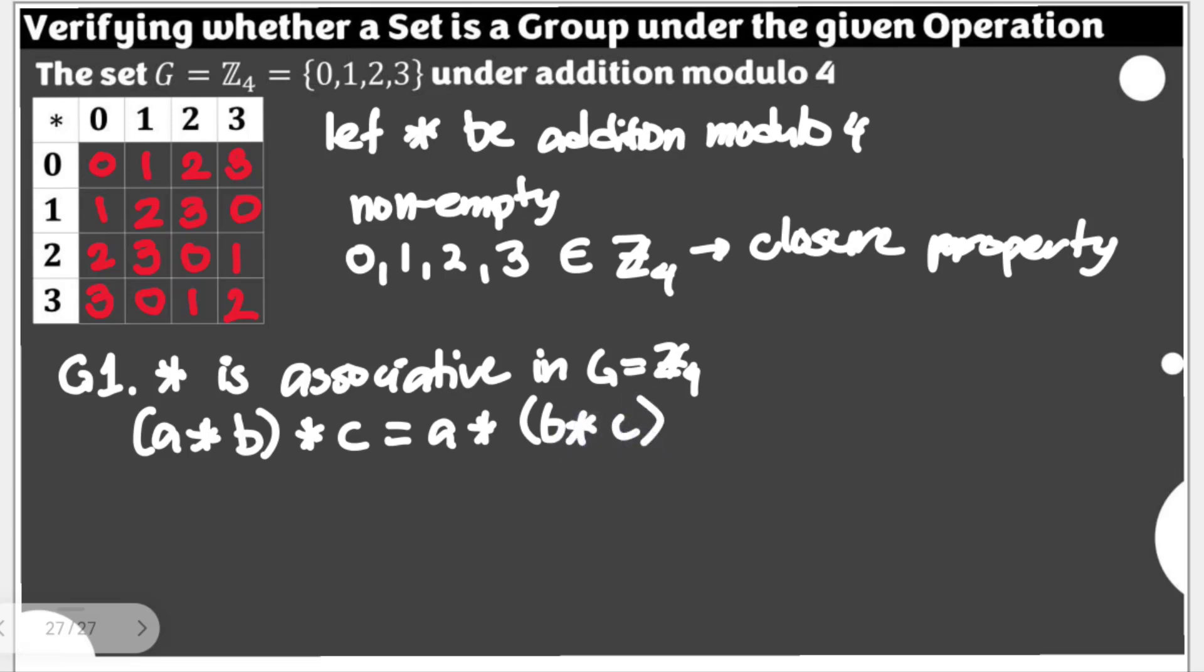But of course, one set of three elements that will satisfy this is not enough for us to say that associativity is satisfied. Hence, we are going to check for all. But it will take us a lot of time. Then, we just need to invoke the associativity for our integers.